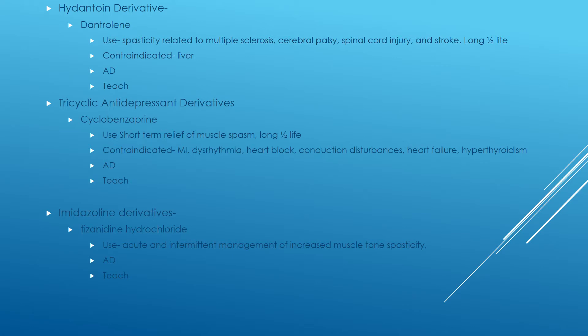Dantrolene is contraindicated with liver issues. Adverse effects include drowsiness, dizziness, lethargy, diarrhea, fatigue, headache, nausea, vomiting, anorexia, and nervousness. Importantly, it can cause fatal hepatitis with jaundice one month after starting the medication or if taken greater than 60 days, so we must monitor for jaundice and monitor liver function tests. That doesn't happen with short-term use. If the medication is not working soon after starting it, it should be discontinued because of the serious side effects on the liver. This drug has a black box warning, so liver function must be checked prior to starting it.